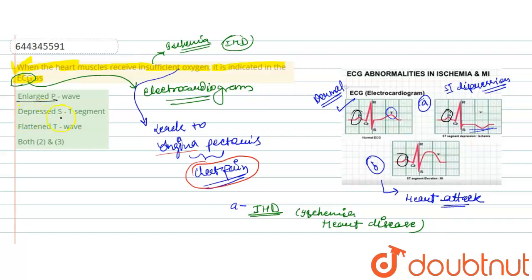Second one is depressed ST segments. Depressed ST segment is seen in this particular graph. The flattened T wave is seen in this graph in the heart attack condition.